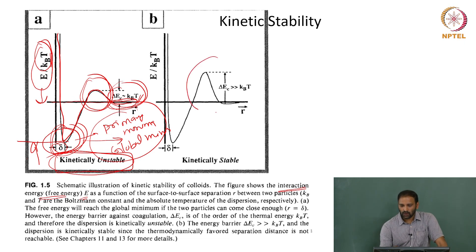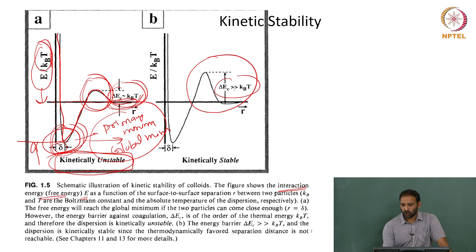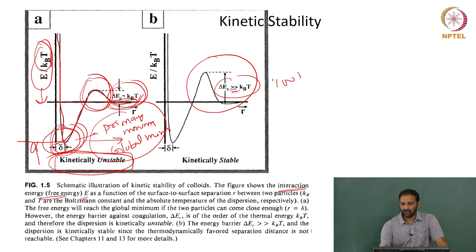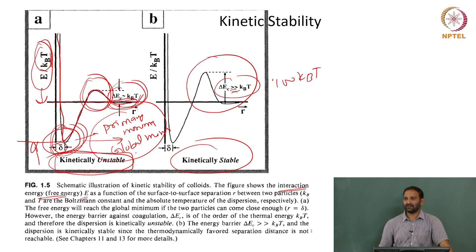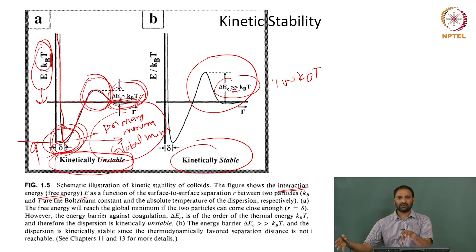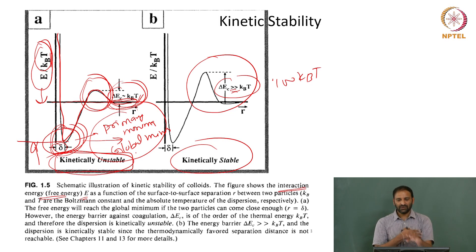On the other hand, if the energy corresponding to the barrier is much, much larger than kBT — say 100 times kBT or several orders of magnitude larger — such dispersions are said to be kinetically stable. So, if the height of the energy barrier is of the order of kBT, the dispersions are kinetically unstable; if it is much larger than kBT, the dispersions are kinetically stable.